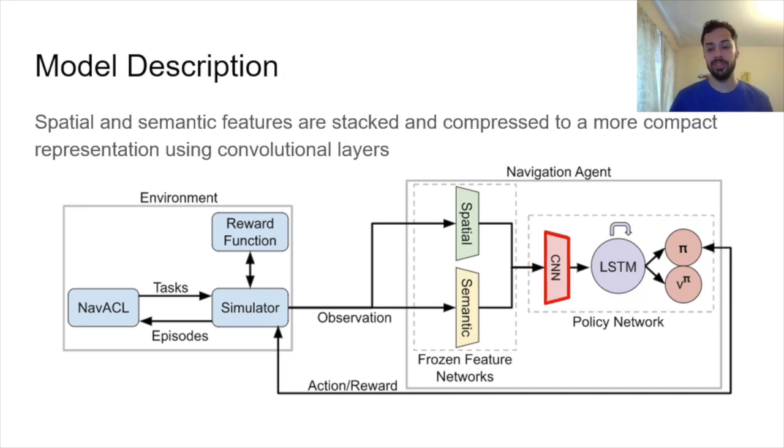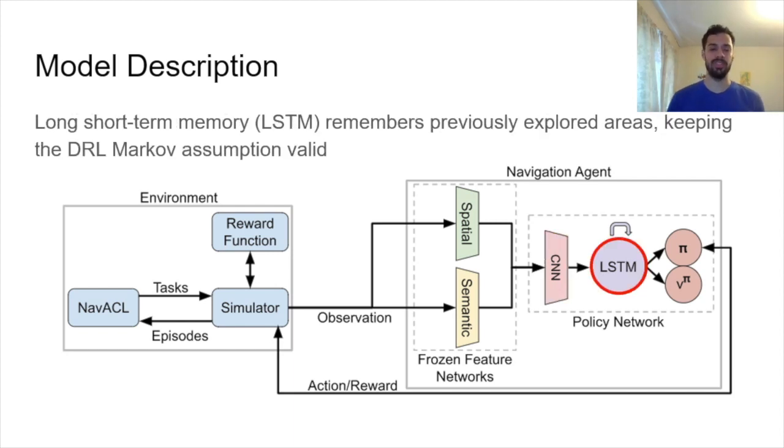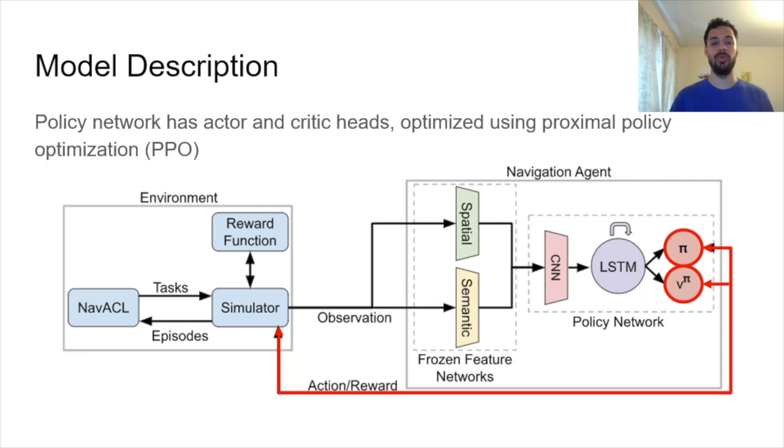Now we're done talking about NAVACL, let's jump to our policy network. We have spatial and semantic features coming into our policy network. First we take these and we stack and compress them to a more compact representation using a convolutional neural network. This compact representation is then fed into our long short-term memory LSTM cells, which allow our agent to remember previously explored areas and keeps the deep reinforcement learning Markov assumptions valid. From the LSTM, we split into two heads, the actor head and the critic head, and we optimize our entire policy network using proximal policy optimization or PPO.